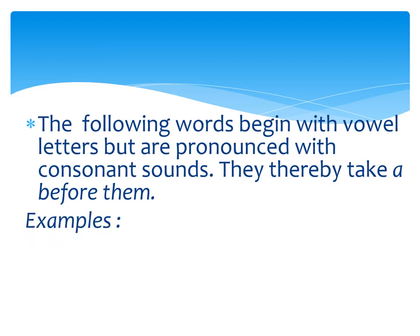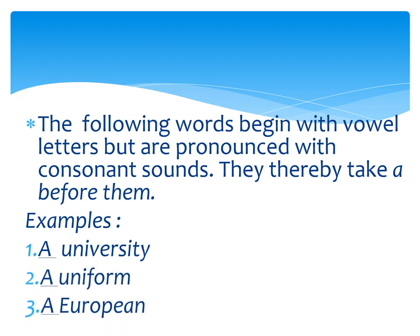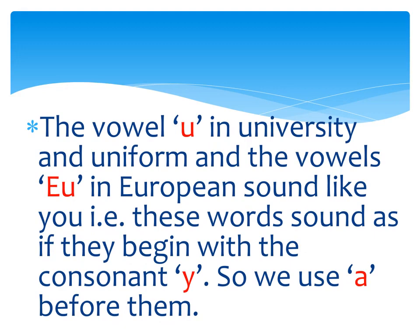The following words begin with vowel letters but are pronounced with consonant sounds, so they take A before them. For example, 'a university' — U is a vowel but we pronounce it 'yuh,' which is a consonant sound. Similarly, 'a uniform' and 'a European' — U and E here are vowels, but they give a consonant sound. The vowel U in university and uniform, and the vowels E and U in European, all sound like 'you,' beginning with the consonant Y. So we use A before them.